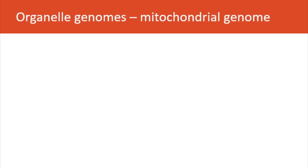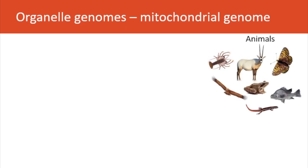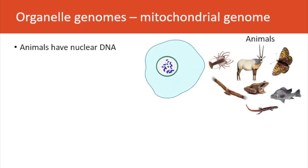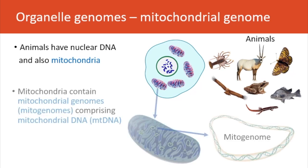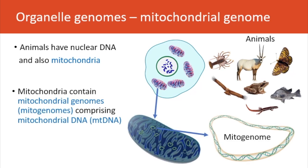In addition to nuclear genomes, organisms may have other genomes borne in their organelles. In the case of animals, they have nuclear DNA in their chromosomes inside the nucleus, but they also have mitochondria. These mitochondria have their own genome — the mitochondrial genome, or mitogenome — and these are made of mitochondrial DNA.